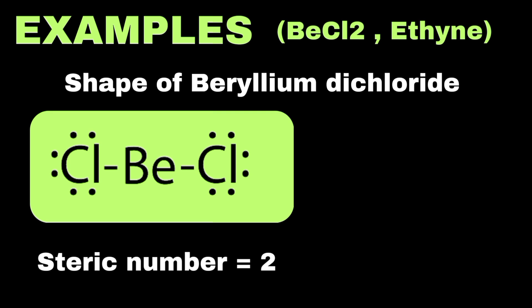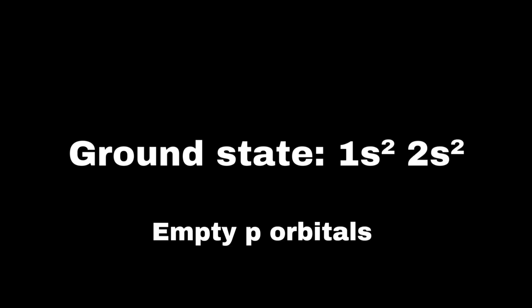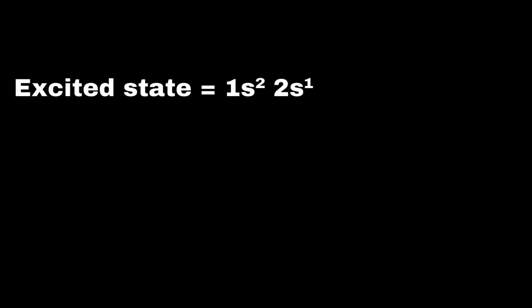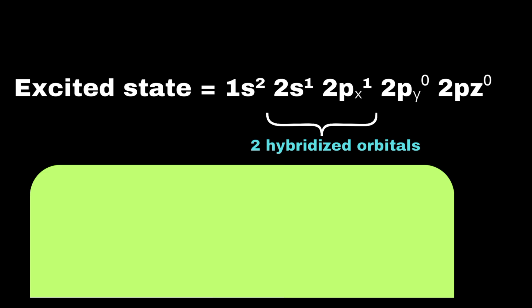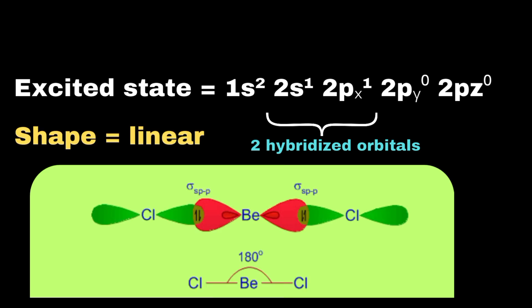Looking at the ground state electronic configuration of beryllium, its atomic number is 4, and the 2p orbitals are empty because all four electrons are in the 1s and 2s orbitals. We need to excite one electron from the 2s orbital to the 2px orbital. These two atomic orbitals then overlap to form two sp hybridized orbitals. The shape of the molecule is linear and the bond angle is 180 degrees.